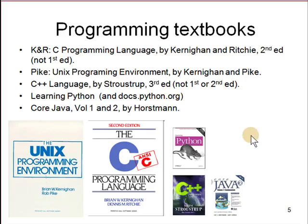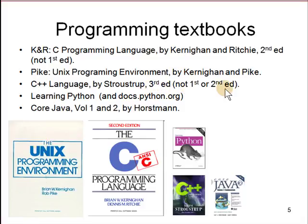The programming textbooks we'll be using are Kernighan and Ritchie for C programming. For the UNIX programming environment we'll use Kernighan and Pike — that's the Bible of shell programming, and you should know the whole book. For C++ we'll use the third edition by Stroustrup. Sometimes we'll need Python 2.7, and for Java we'll use Core Java volumes one and two by Horstmann.